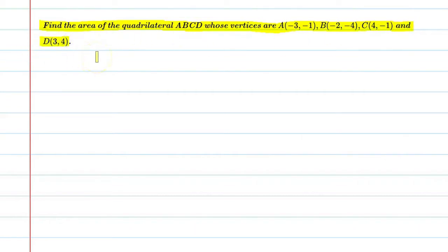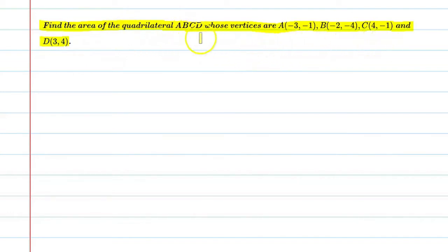Alright, so basically what we have to do in this question — there is a quadrilateral ABCD whose vertices are given and we have to find the area. This is a quadrilateral, so let's start the solution. First, let's write the given.